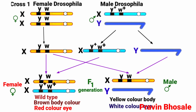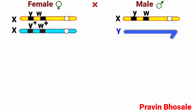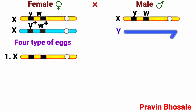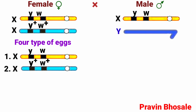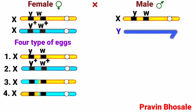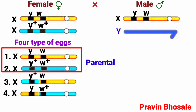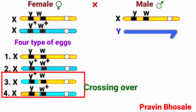This is the F1 generation. If F1 females are self-crossed, the female produces four types of eggs. The first has an X chromosome with small y and small w — this is parental. The second has an X chromosome with y+ and w+ — also parental. The third and fourth are different: when meiosis takes place, there is exchange of genetic material through crossing over. The third gamete has y+ and w, and the fourth has y and w+. So the first and second female gametes are parental, while the third and fourth result from crossing over.